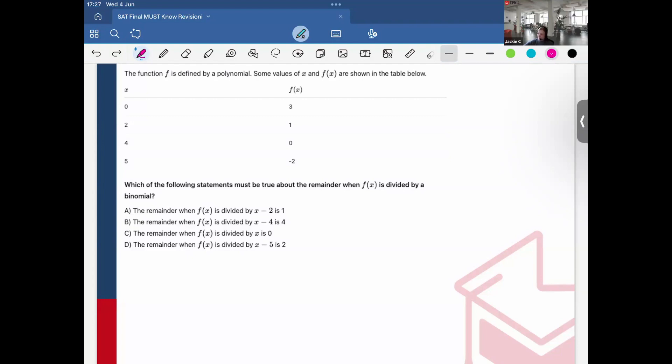So let's take a look at this one. The function f is defined by a polynomial. Some of the values of x and f(x) are shown in the table. So we can see values. So I have like x is negative 3, 0, 3. And then we have 2 and 1. Then we have 4 and 0 and 5 and negative 2.